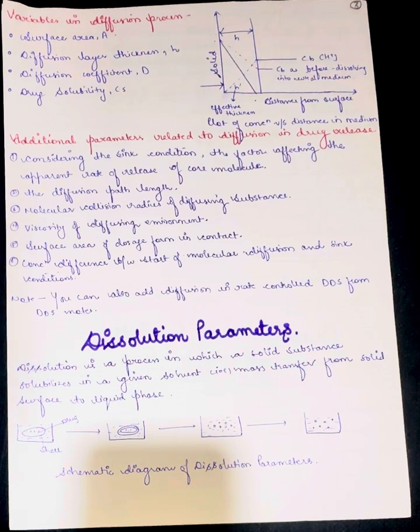Next we have viscosity of the diffusing environment, fifth the surface area of dosage form in contact, sixth concentration difference between start of molecular diffusion and sink condition. You can also add diffusion in rate-controlled drug delivery systems from drug delivery system notes. This is the main part of the channel which has the full notes.